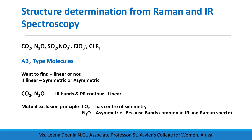Applying the Mutual Exclusion Principle to CO2, we can see that it possesses a center of symmetry. But in the case of N2O, we can see bands common in infrared and Raman spectra. So we can conclude that N2O is asymmetric.